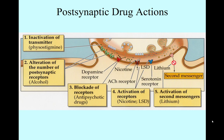It will prevent acetylcholine from being reuptaken. Number two, what can happen is an alteration of the number of receptors that sit on the post-synaptic cell. We know that both alcohol and heroin can do this — they can create a homeostatic imbalance so that we have more or less receptors sitting at the synapse.